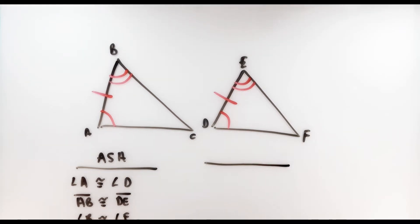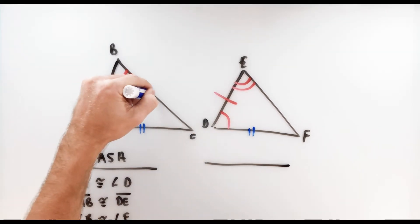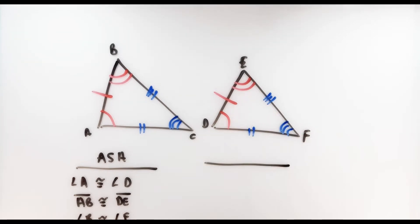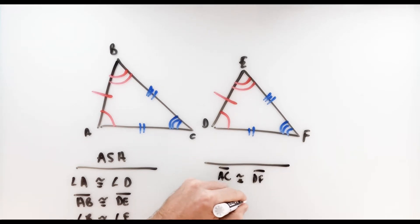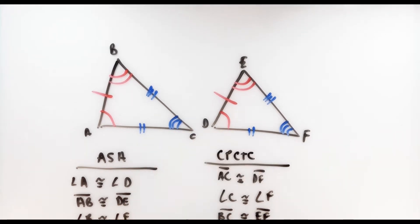What else in this picture has to be congruent based on that fact? Anything else that's not marked congruent will have to be congruent because these are congruent triangles. Namely, we know that segment AC is congruent to segment DF, segment BC is congruent to segment EF, and angle C is congruent to angle F. The other three parts that are not yet marked also have to be congruent, because corresponding parts of congruent triangles are, in fact, congruent.